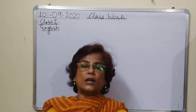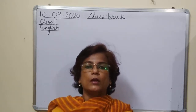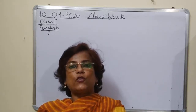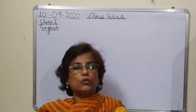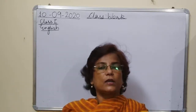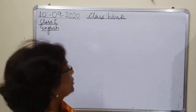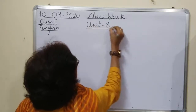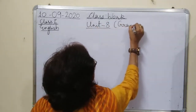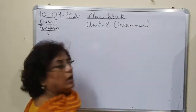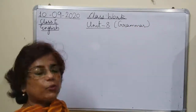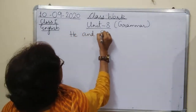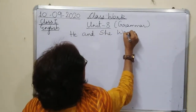So let us start the class. We have completed Unit 7 in grammar — Unit 7 was 'These are and Those are.' Today we will start Unit 8 in grammar, and the name of the unit is 'He and She Words.'